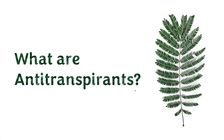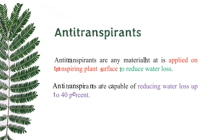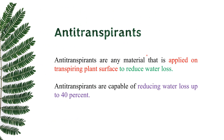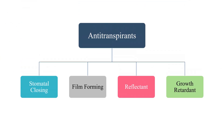Today we will be talking about antitranspirants. Antitranspirants are any material that is applied on transpiring plant surfaces to reduce water loss. Antitranspirants are capable of reducing water loss up to 40 percent. There are mainly four types of antitranspirants.